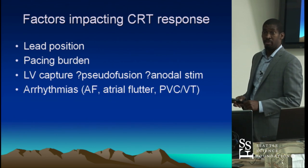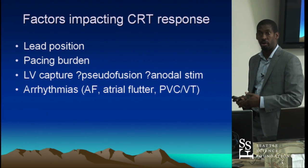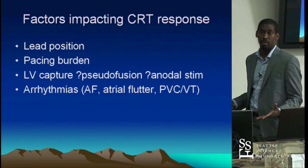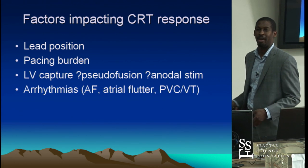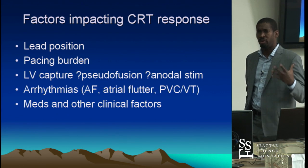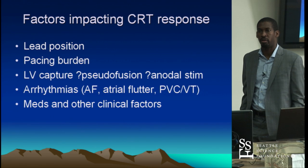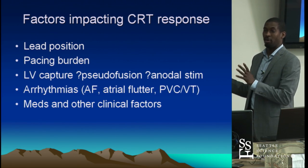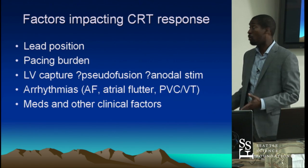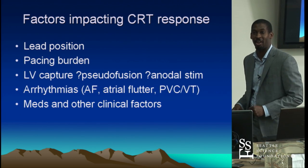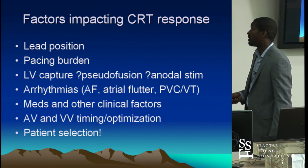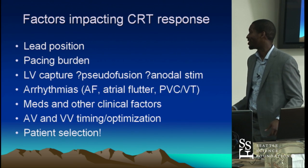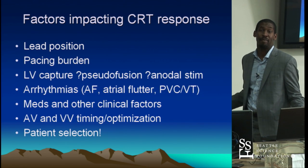AFib needs to be addressed, either with AV nodal ablation if it's permanent AFib, or antiarrhythmic therapy to suppress arrhythmias — otherwise you've put in a $50,000 device that won't benefit the patient. Medications are important: some people believe once they get the CRT device they don't have to take their medicines anymore, but all clinical trials looked at CRT in the setting of background medical therapy, and there's a synergistic relationship between medicines and CRT. Patient selection matters too — patients with a narrow QRS don't have a clinical response to CRT, and patients not optimally medically managed won't benefit.